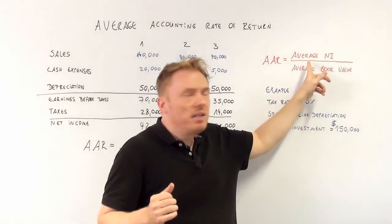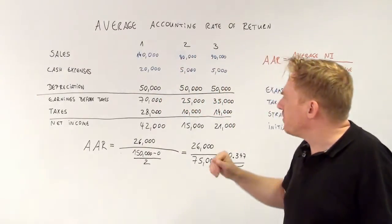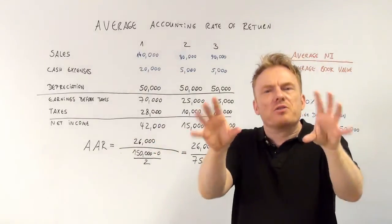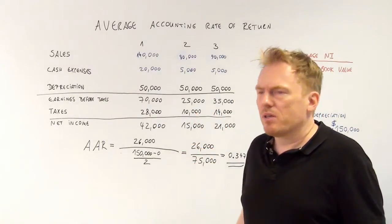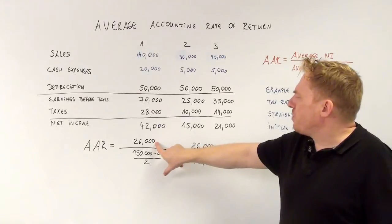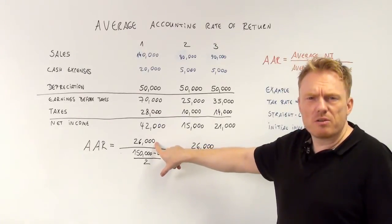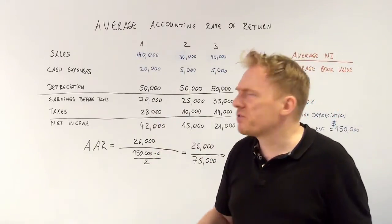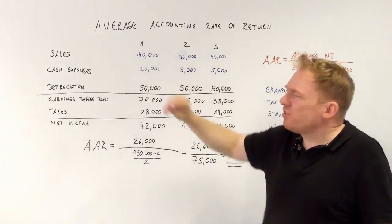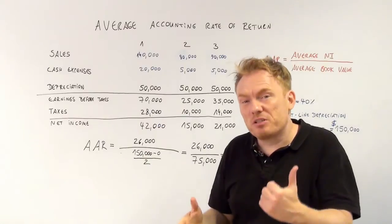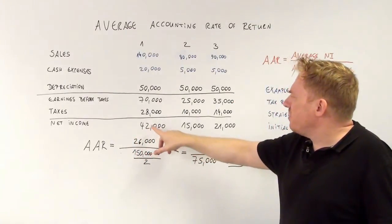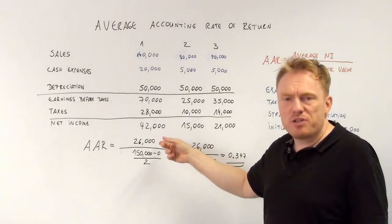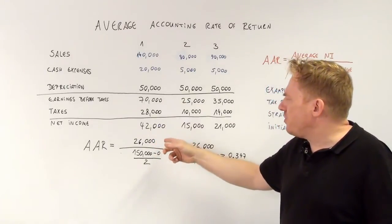Now let us calculate average net income. Average net income is $42,000 plus $15,000 plus $21,000. You sum up those three numbers, divide the result by three, and you get $26,000. $26,000 is the average net income, because you buy this machine, pay $150,000, get additional sales and additional cash expenses, and these are the net income numbers across three years. As an average, the average net income is $26,000.